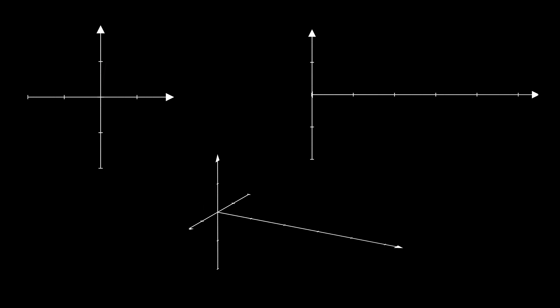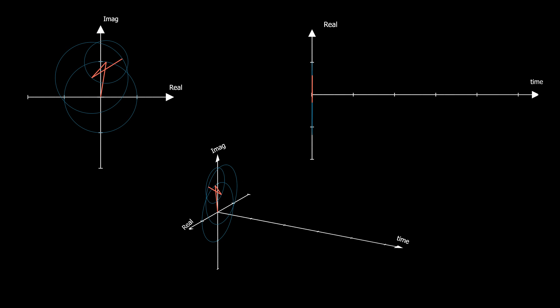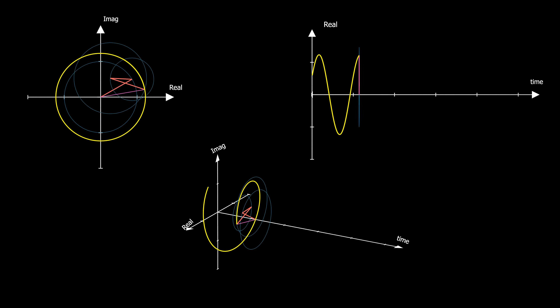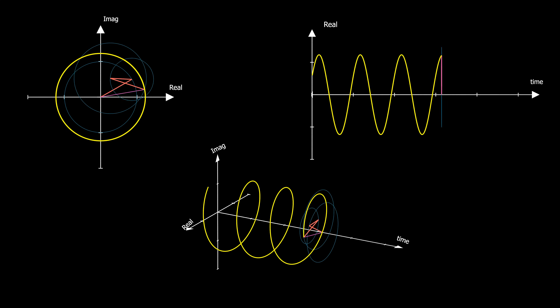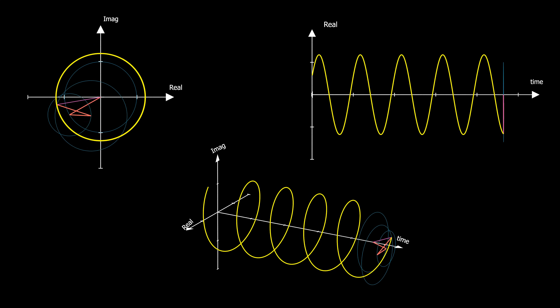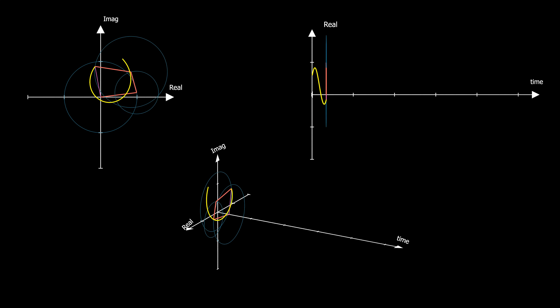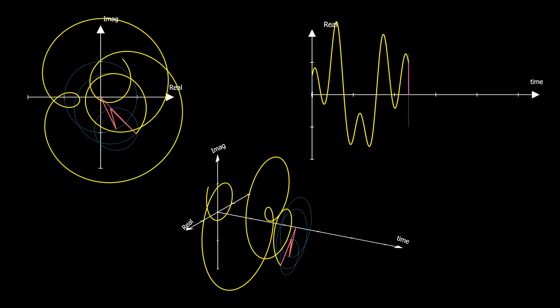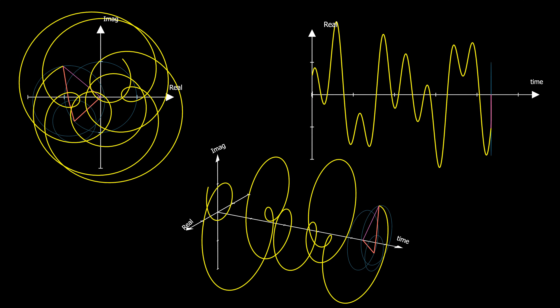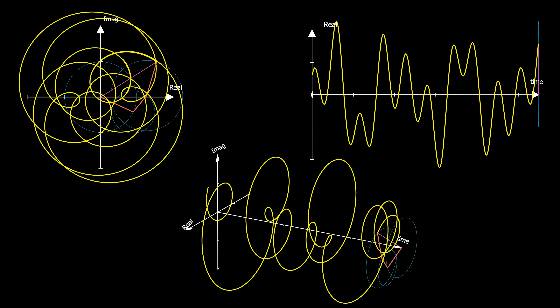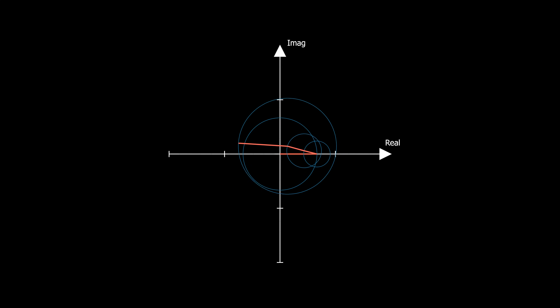Since phasors are vectors, they can be added and subtracted graphically — the tail of each vector is placed at the head of the previous one. Each vector has its own magnitude and phase angle. If they are rotating with the same frequency, the resultant is a vector with constant magnitude and frequency corresponding to a sinusoid. If they rotate with different frequencies, the resultant is a vector with variable magnitude and frequency, and its corresponding signal consists of all the rotating frequencies — so the resultant signal can be represented as a sum of sinusoids, each with its own magnitude, phase, and frequency. This is the concept of Fourier transform.